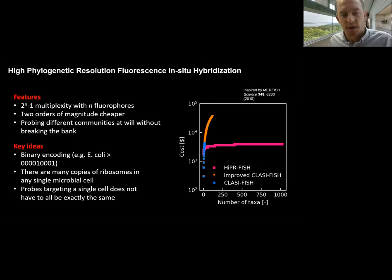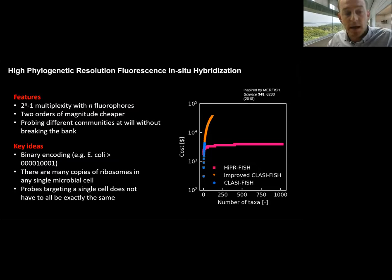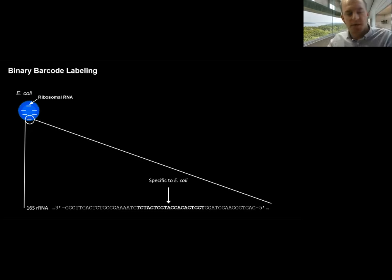The key ideas that make this possible are: first, binary encoding. We assign a binary encoding to each species in a community, where zeros and ones refer to the absence or presence of a fluorophore. We then take advantage of the fact that there are many copies of ribosomes in each microbial cell, which allows us to probe a single cell with a combination of many different FISH probes. For example, if we're probing E. coli, there are hundreds — often thousands — of copies of the ribosome and ribosomal RNA present in each cell. This ribosomal RNA is highly conserved; all microbes have this 16S ribosomal RNA sequence, but there are parts used for phylogenetic tagging that are specific to a particular species.